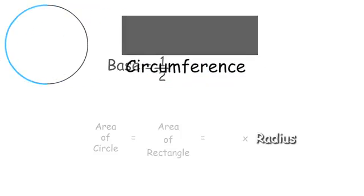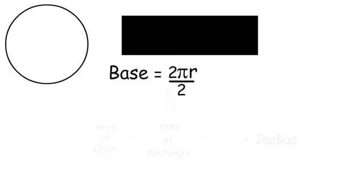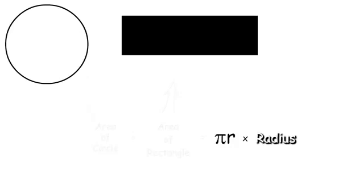Remember that the circumference is equal to 2 pi r. When we combine it with one-half, the 2's cancel out, and base equals pi r. So now base times height becomes pi r times r. Combine the r's together and we have pi r squared.